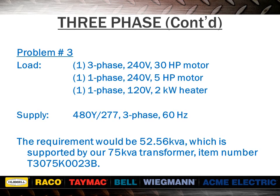For problem three, reviewing table four in section one of the catalog, a 30 horsepower motor requires 32.4 kVA of transformer. From table two, a 5 horsepower motor requires 6.72 kVA. Single-phase load needs to be added three times to give the equivalent three-phase rating. The sum of all different loads is 52.56 kVA, supported by our 75 kVA transformer, item number T3075K0023B, on page 30, section one of the catalog. This transformer comes with a 120-volt tap able to provide 5% of the nameplate rating — in this case, 3.75 kVA — which is sufficient to power a two-kilowatt heater.